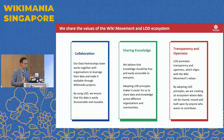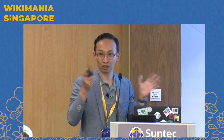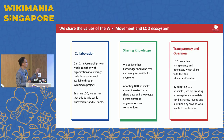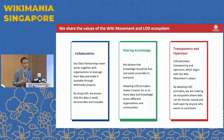Some of the organizations we work with include the German National Library, Smithsonian, the Ghana Parliament, Nigerian libraries, and the Comedy Singapore Archives. We believe that knowledge should be free and easily accessible to everyone. By adopting linked open data principles, it enables institutions to share data and knowledge across different communities and projects. We also want to promote transparency and openness, which aligns with the whole Wiki movement's values, creating an ecosystem where data can be shared, reused, and built upon by anyone in the community.